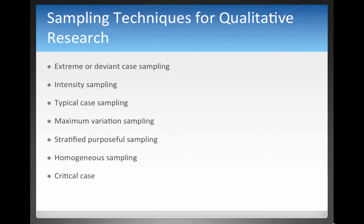There are quite a few qualitative sampling techniques. One thing that's different between quantitative and qualitative is that in quantitative research, if you pick one method, that's your sampling technique. But in qualitative research, a sample can sometimes qualify for two different sampling techniques. The first kind is extreme or deviant case sampling, where you pick a case or person who is very different — for example, someone who won the National Teacher of the Year award. That's a really extreme case.